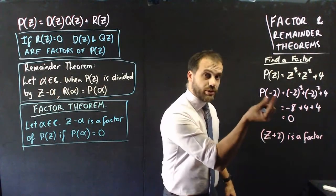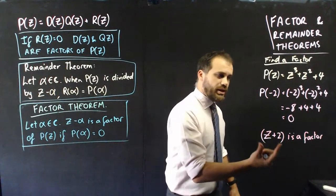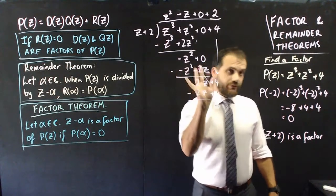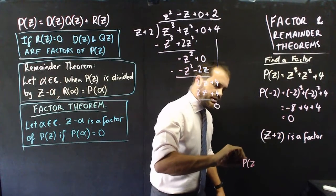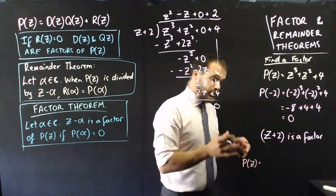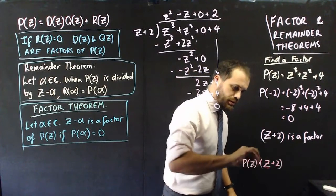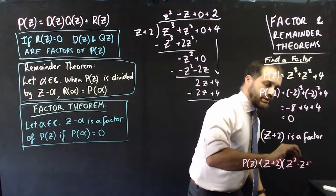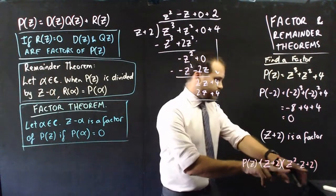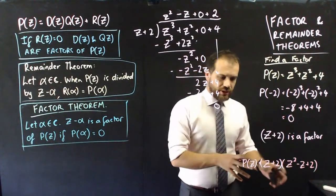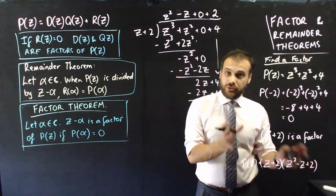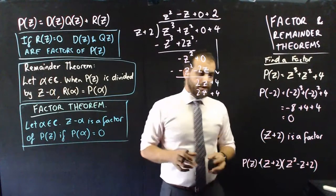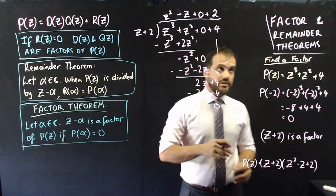Because remember, it's got to be the reverse of the thing that you started with. So now that I have Z plus two as a factor, I could do some polynomial division here. And I can now say that P z can be factorized as Z plus two times whatever my answer was there, Z squared minus Z plus two. Now, can I factorize that further? Maybe, probably not. But that's as far as I want to go right here because I just wanted to show you the factor and remainder theorems and a little bit of polynomial division. If you don't know that, you've got to practice. That's it.